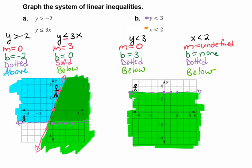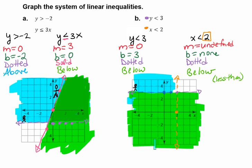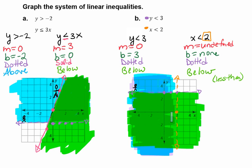Now I'll graph x is less than 2. This has an undefined slope and no y-intercept. We go to the number 2, and an undefined slope means a vertical line. So we create a vertical dashed line at x = 2. You can't really draw a little man on a vertical line. When we think of less than, we want all the numbers less than 2 — like 0, 1, and negative 2 — so we shade to the left. We see the double color happening where both shadings meet, and that's our solution space.